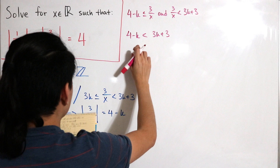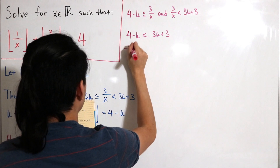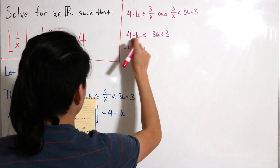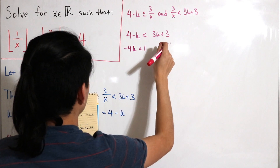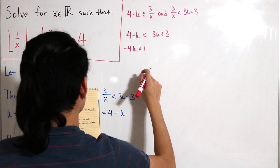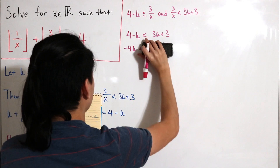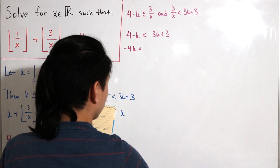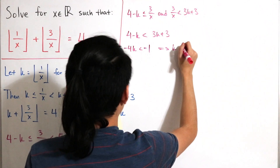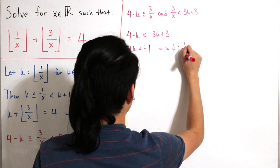Solving for k: subtract 3 and rearrange to get 4k greater than negative 1, which simplifies to k greater than 1 over 4. That gives us one part of the inequality.